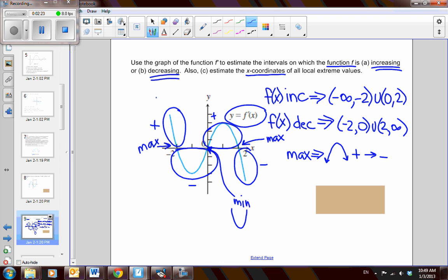So therefore, we have maximums when the x-coordinate is equal to negative 2 and 2. And then we have a minimum when the x-coordinate is at 0. There you go, we have answered all of the questions.